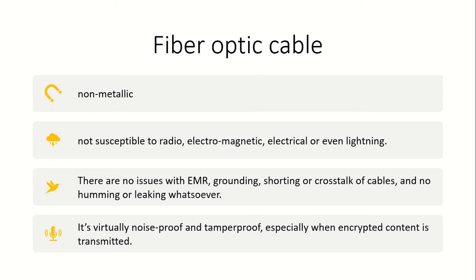Fiber optic cable is quite secure compared to copper wire. Being non-metallic, there is no electromagnetic wave pickup. It is not susceptible to radioactive waves, electromagnetic waves, electrical interference, or even lightning. There is no issue with grounding, shorting, or crosstalk between cables, and no humming or leaking whatsoever — it is virtually noise-proof and transmits encrypted content.